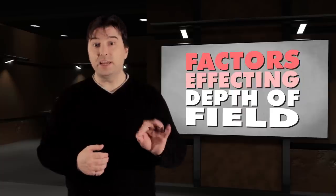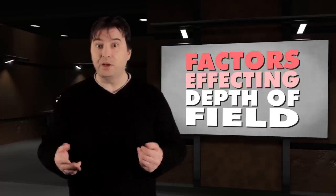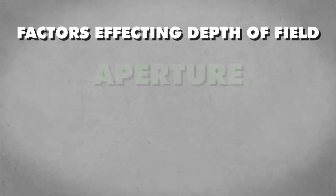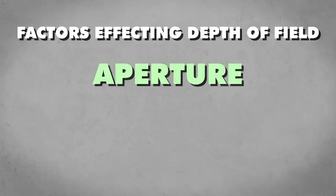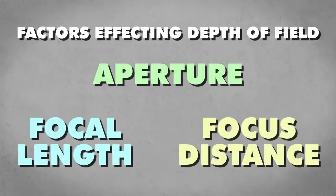Getting a particular depth of field in your shot requires a balance of three key factors: aperture, focal length, and focus distance.